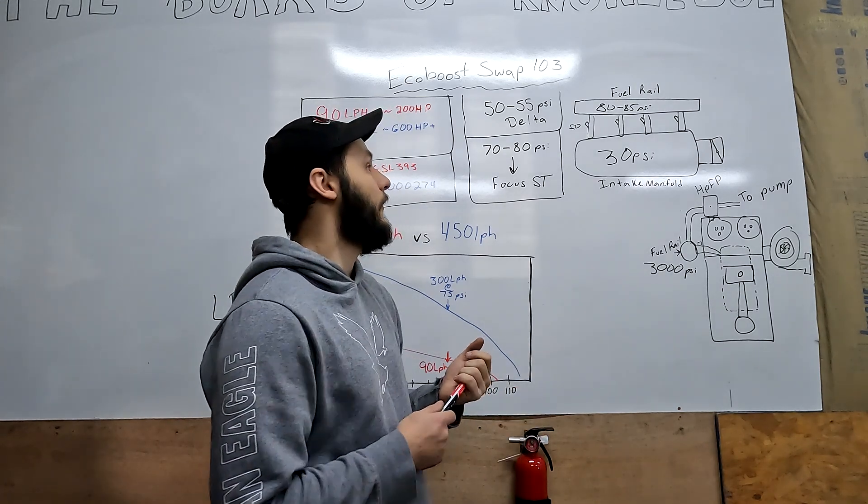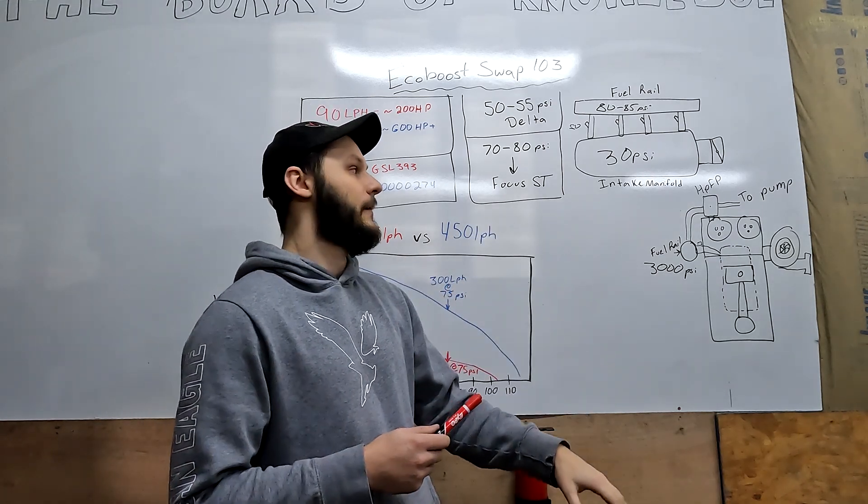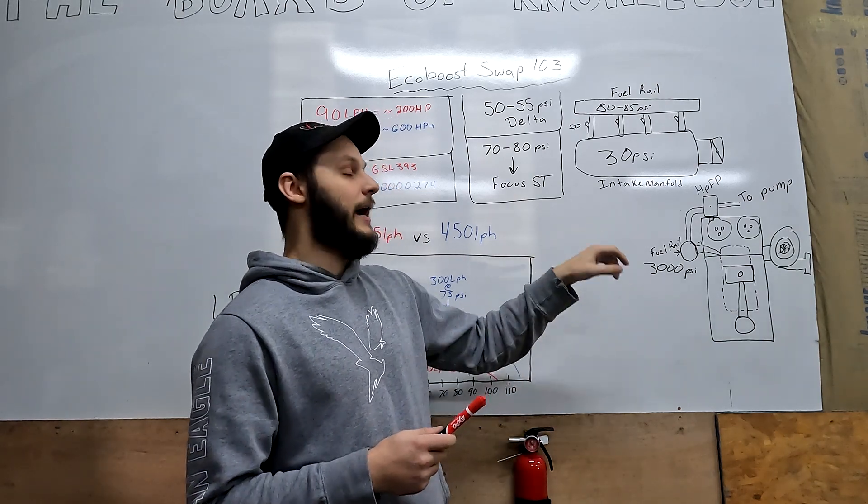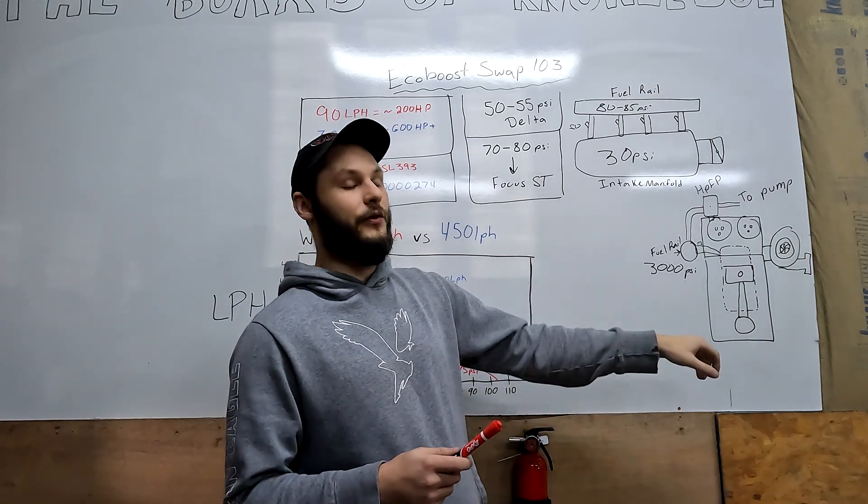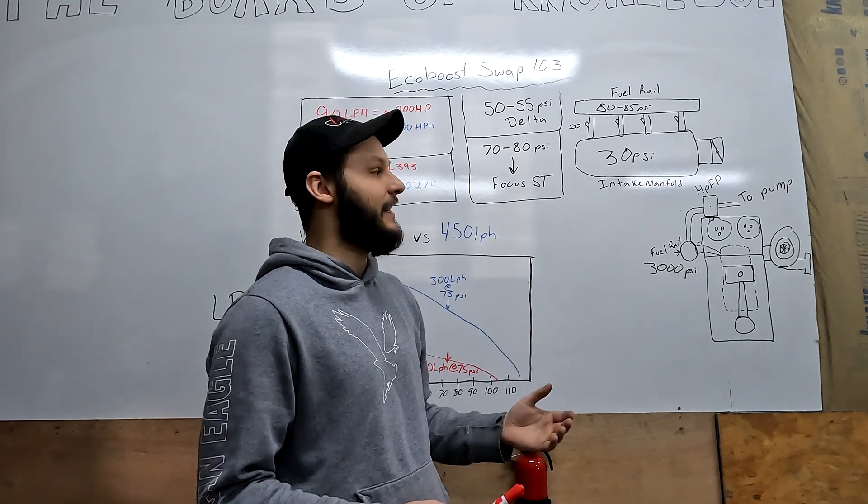So what does this mean for us? We can't follow the Ford directions. What do we do? What I've done is taken a look at the Focus ST, this is the car that this engine would have came out of, and what they're doing is 70 to 80 psi on the low side fuel pressure up to the high pressure fuel pump.